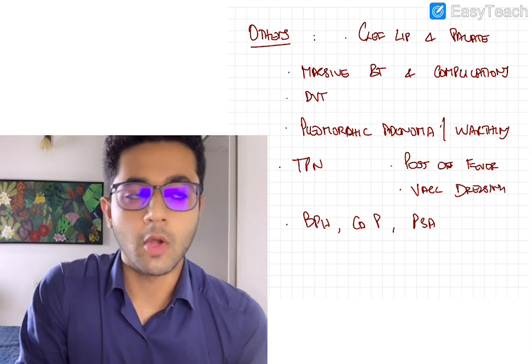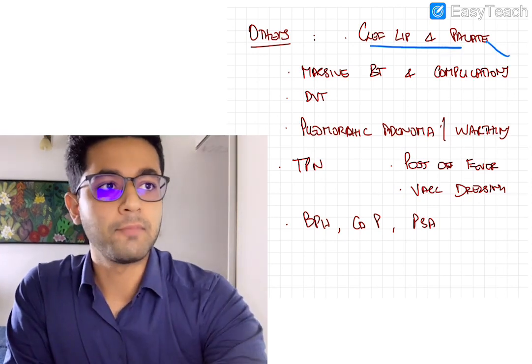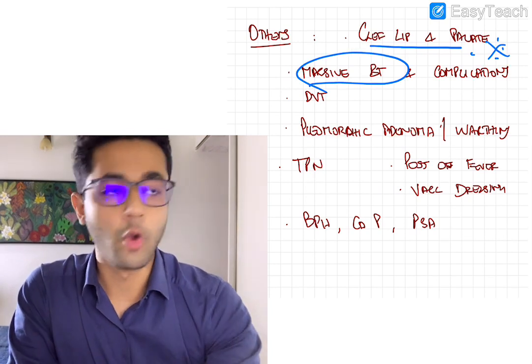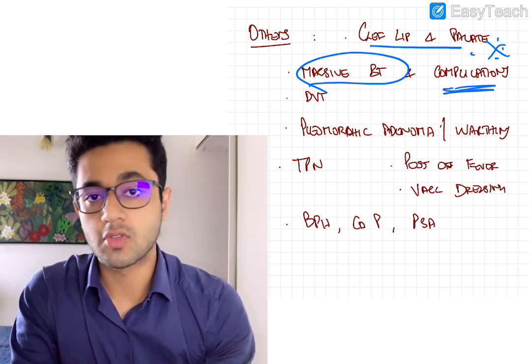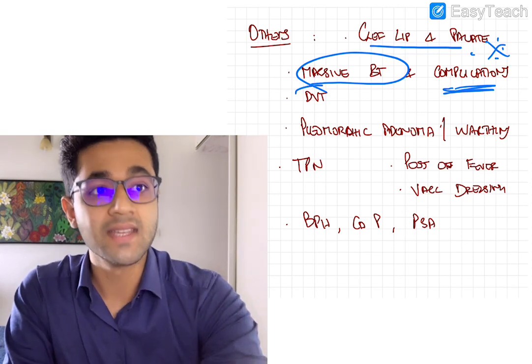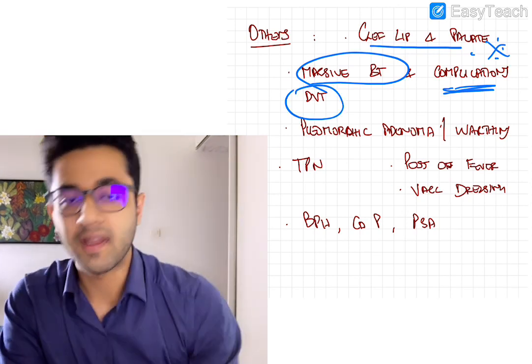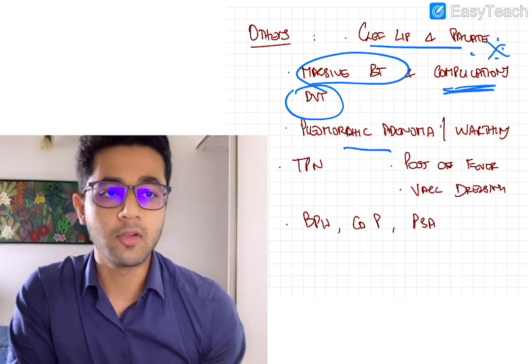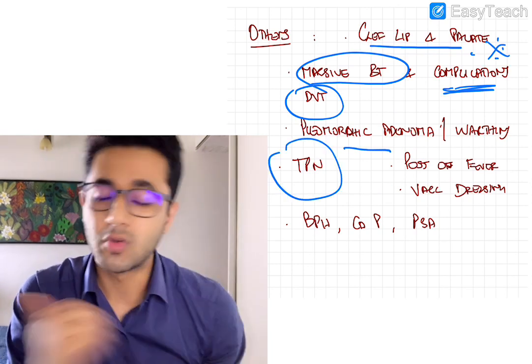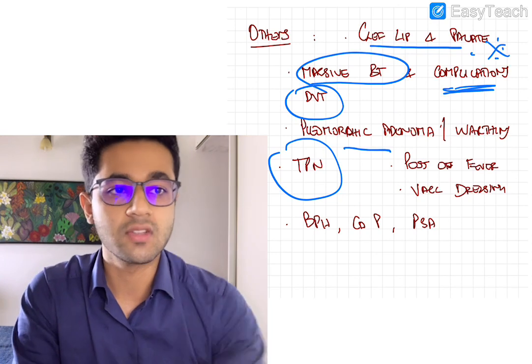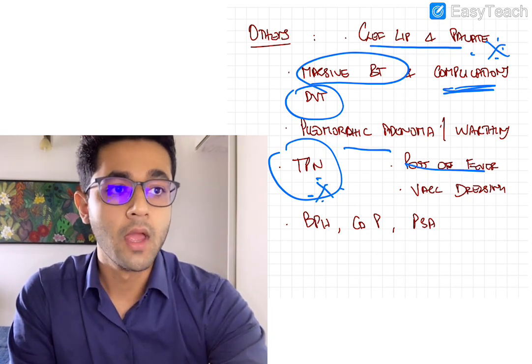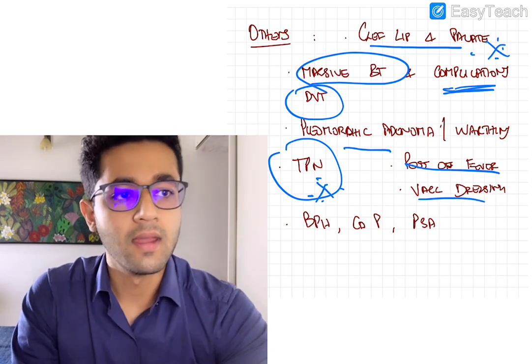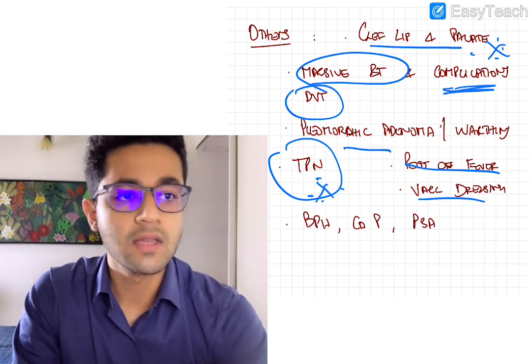Lastly, coming to a few other topics which are important. Cleft lip and cleft palate, frequently asked. Massive blood transfusion or whole blood transfusion and complications associated with blood transfusion is frequently asked. DVT, DVT prophylaxis is frequently asked. Pleomorphic adenoma or Warthin's tumor of parotid can be asked. Total parenteral nutrition, its complications and indications are important, should know them. Causes of post-operative fever, it's more practical but can be asked. Negative pressure dressings can be asked.